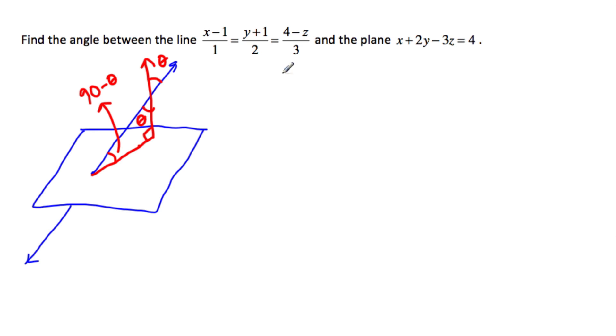So first we need to convert this equation into vector form. So let's say that r is equal to my position vector plus t times my direction vector. So if I set this whole thing equal to t, multiply by 1 on both sides, I get 1t, add 1, I get 1. So x is equal to 1 plus t.